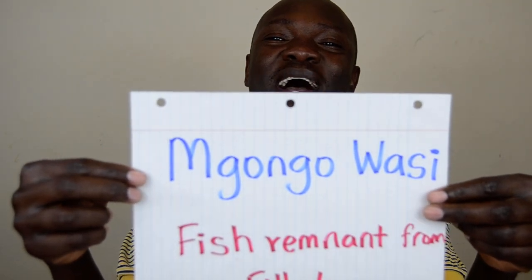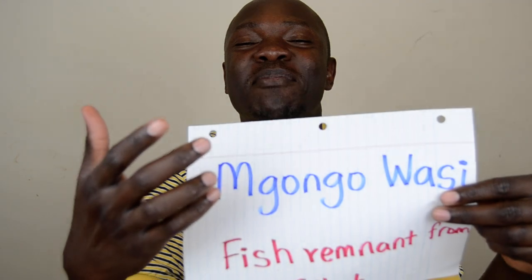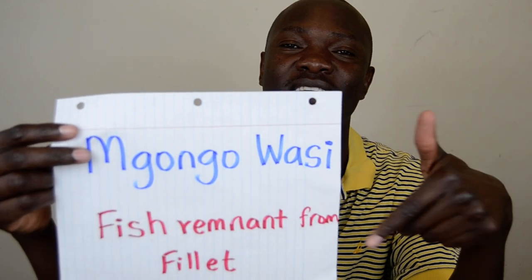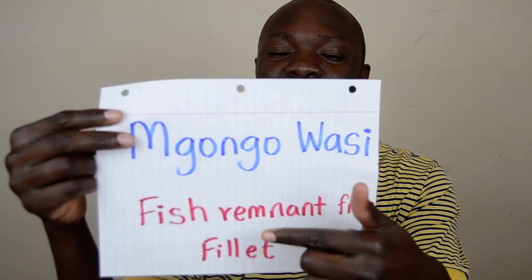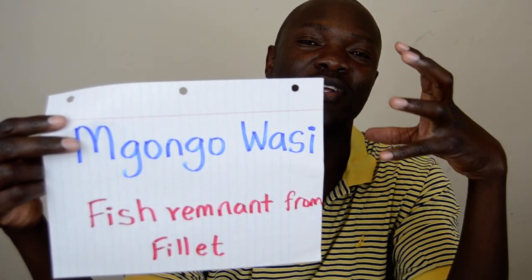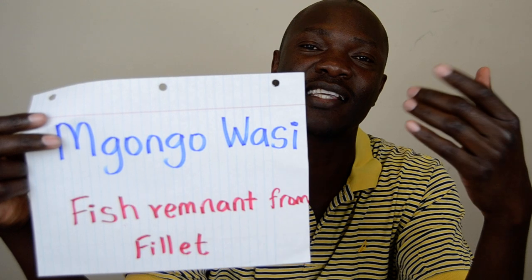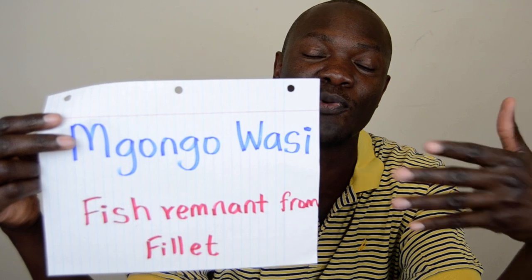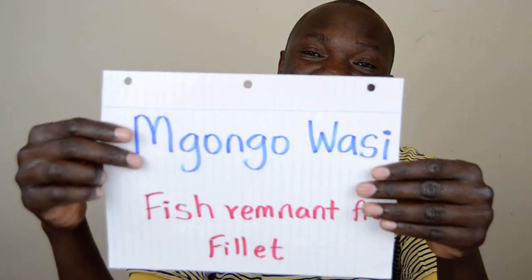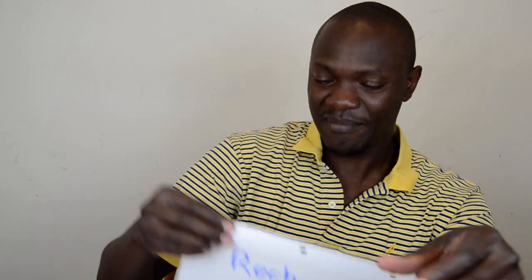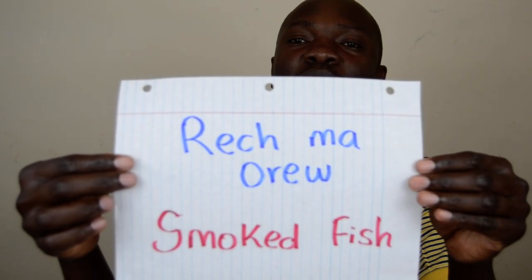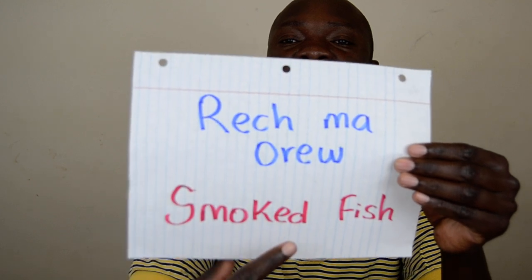There is some fish especially in Kisumu called Mgongawasi. Mgongawasi is a Swahili term that means 'bareback.' This is the fish remainders — the head and scales — left after fillet fish is exported. It's taken back especially to local areas where people make soup out of it. So that's called Mgongawasi. Another term is 'rich maoreo' — that is smoked fish.